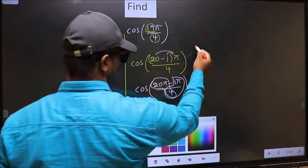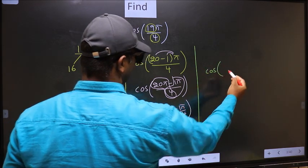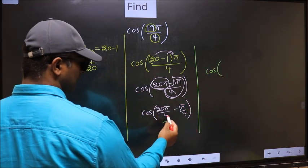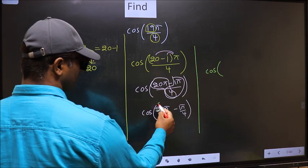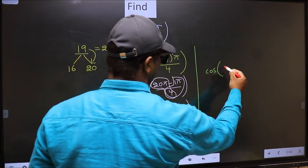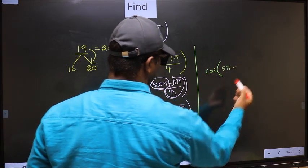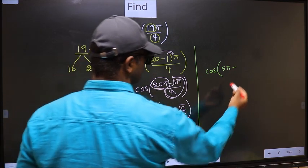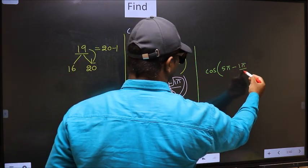Next, cos. Now here you should cancel, 4 ones, 4 fives, so we get 5π minus, this no change, 1π/4.